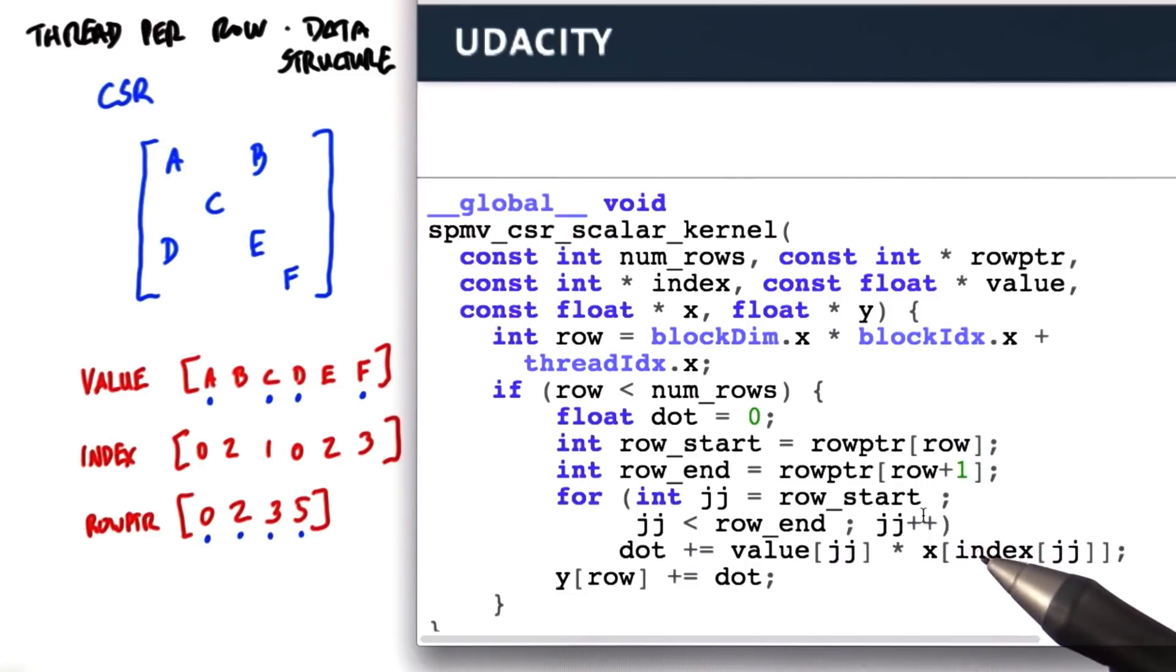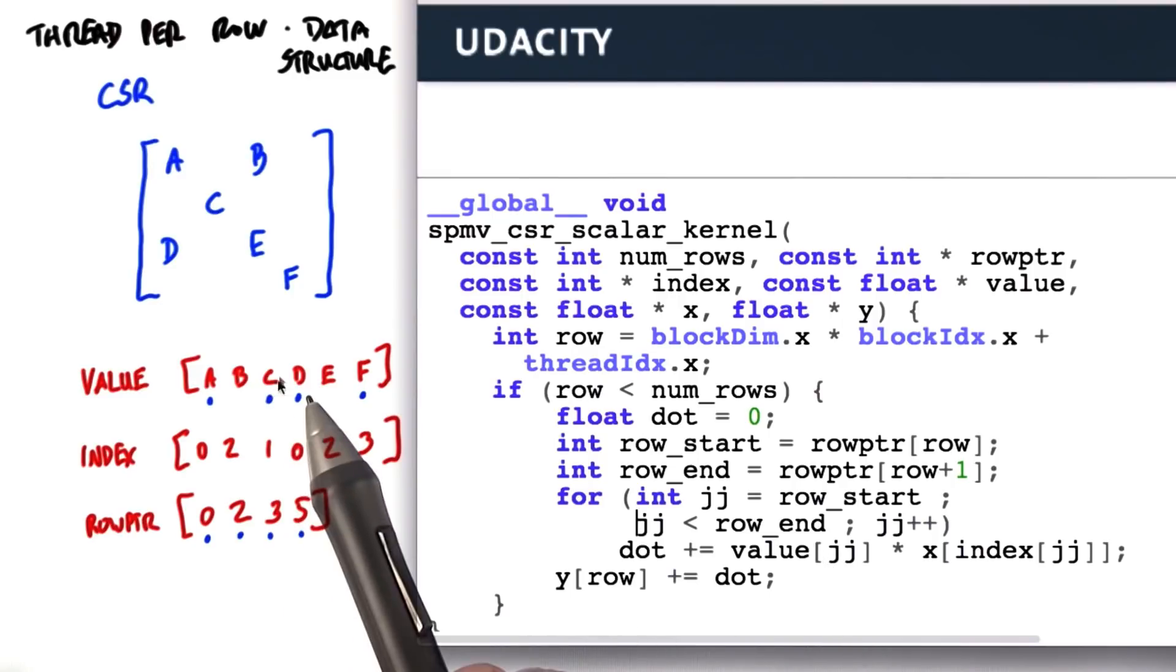And at every iteration of that loop, we will multiply two things. One is the value of that element. So in this case, d.